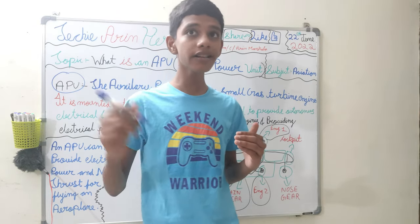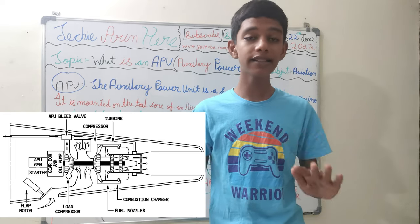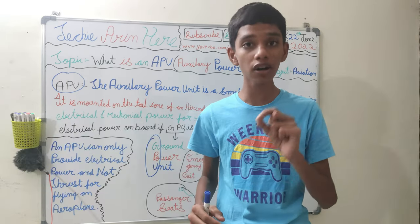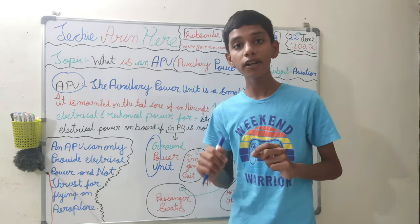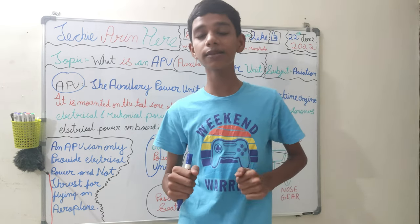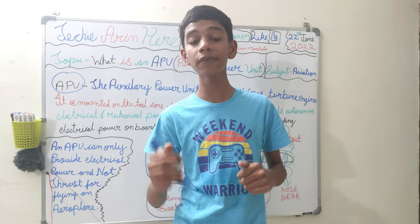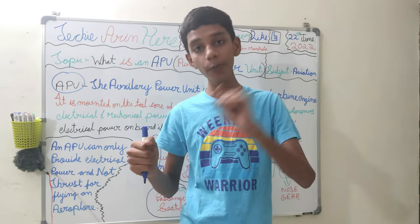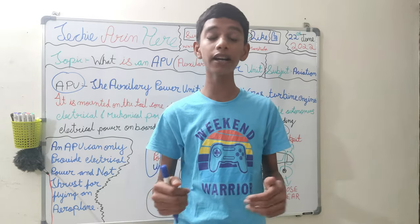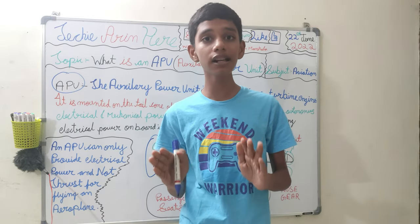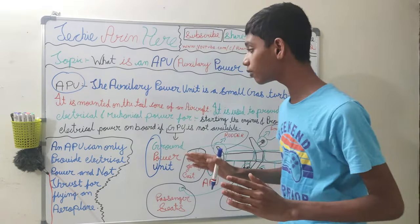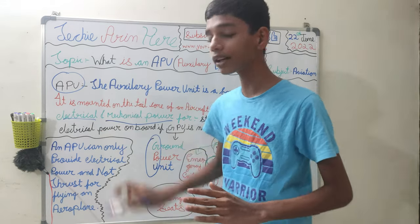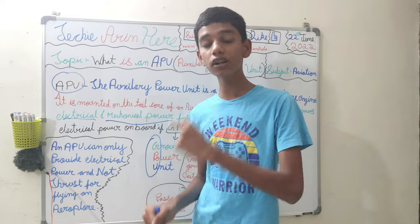If you've watched the movie Sully, when the bird strike occurred and the engines completely failed, the pilot turned on the APU to keep hydraulic systems and other systems working. In a plane, hydraulic systems are used — there are no manual systems, because manual operation would make it very hard to control. So to power the hydraulic system, both mechanical and electrical power are required, and that's where the APU comes in.